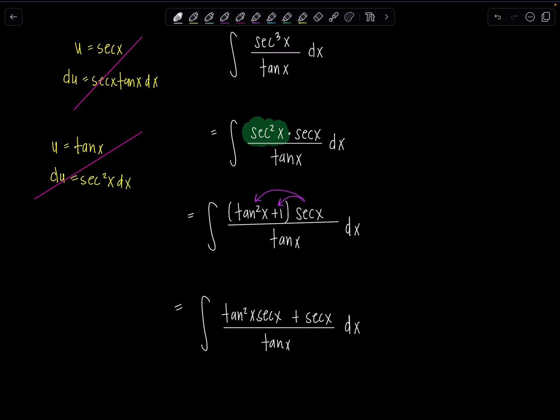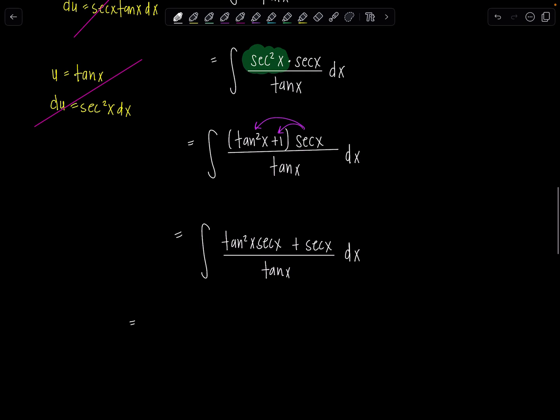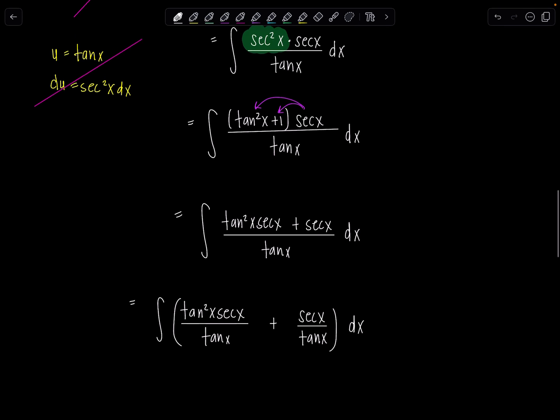And so we're going to have tan squared x secant x plus secant x over tangent x dx. How are we doing? Well, now that I have two terms in the numerator and just one denominator, let me write each of the terms separately over tangent x.